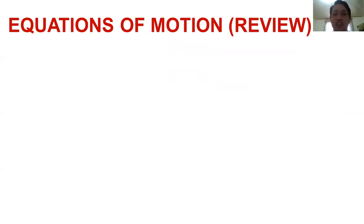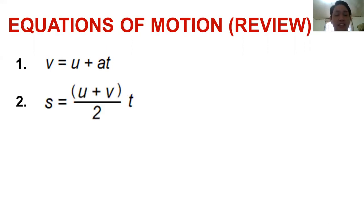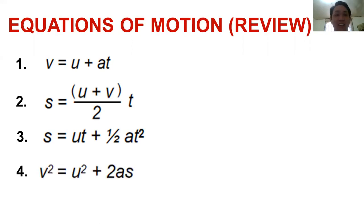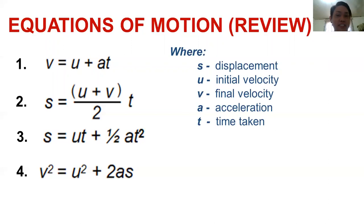Last time we talked about equations of motion. We have equation 1: v = u + at. Equation 2: s = (u + v)/2 × t. Equation 3: s = ut + ½at². And equation 4: v² = u² + 2as. The quantities are: s is displacement, u is initial velocity, v is final velocity, a is acceleration, and t is time.